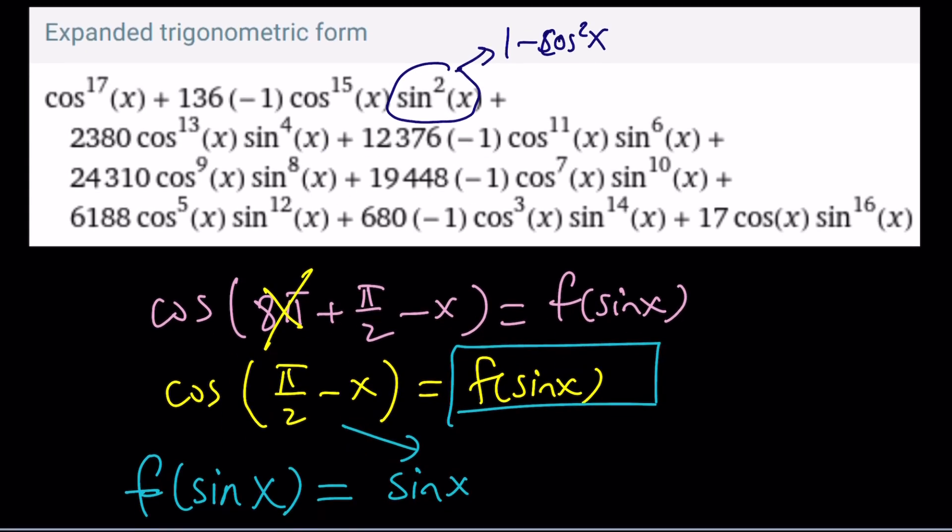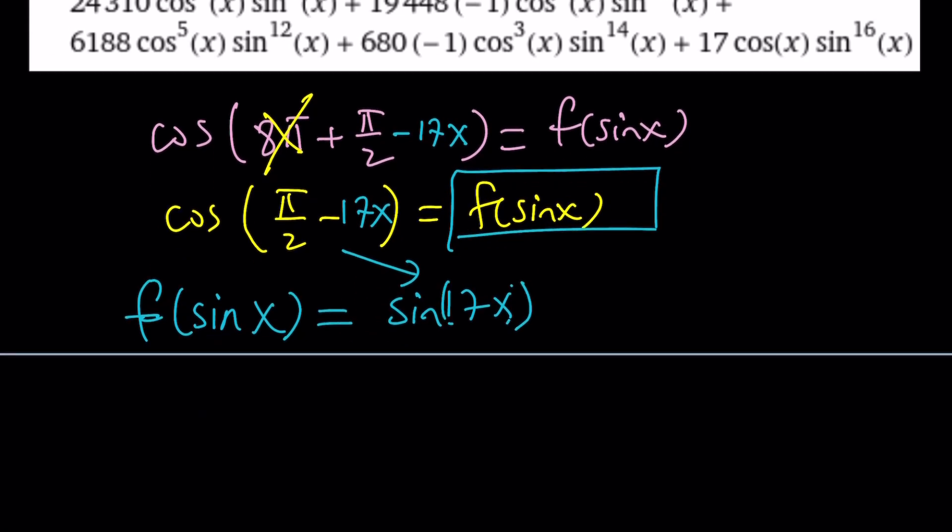Therefore, we should have a -17x here as well. And then, of course, this should also be -17x. And then this should be 17x as well. In other words, f(sin x) will be sin(17x), which is basically parallel to what we originally had.